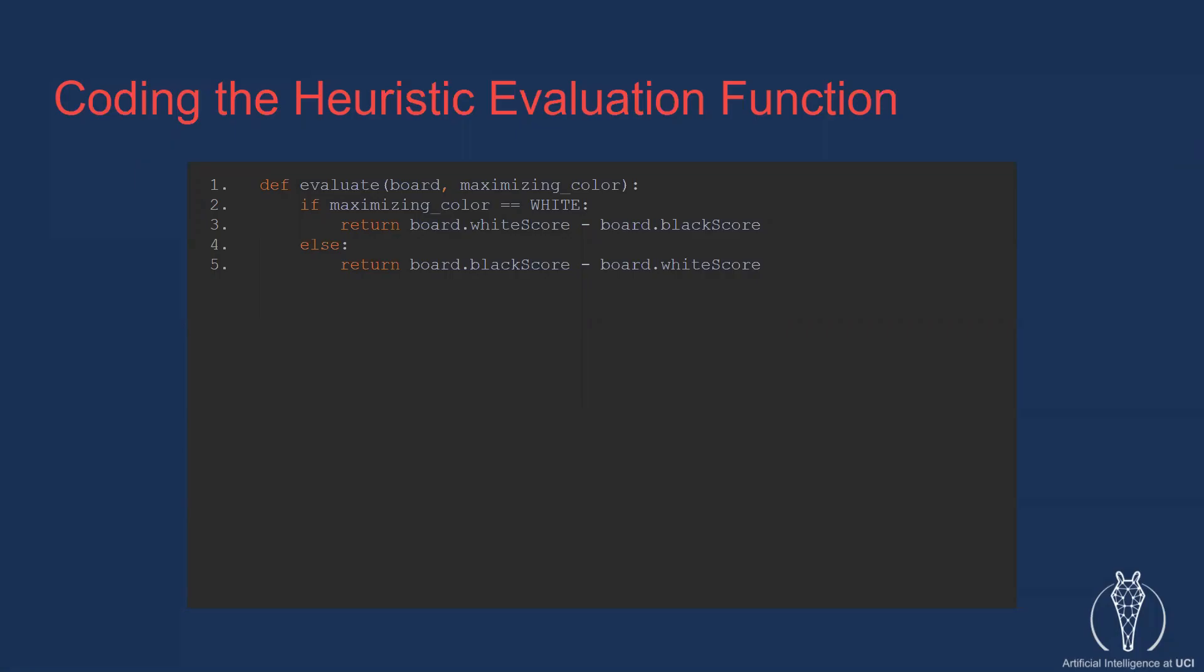The code for this part is pretty short. The function will have two parameters, board and maximizing color. If the maximizing color is white, then we return white score minus black score. The reason we put white score first in the subtraction is that we want a positive result to indicate that white is winning if white score is greater than black score, but we want a negative result if the opposite is true. Conversely, when we are computing the material score for black, we simply reverse white score and black score in the equation.